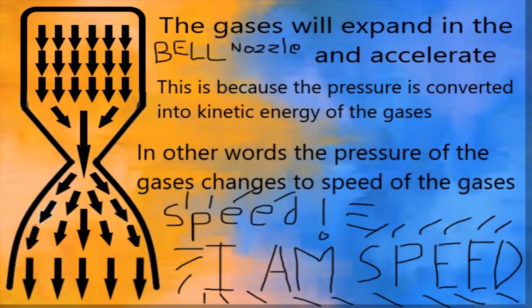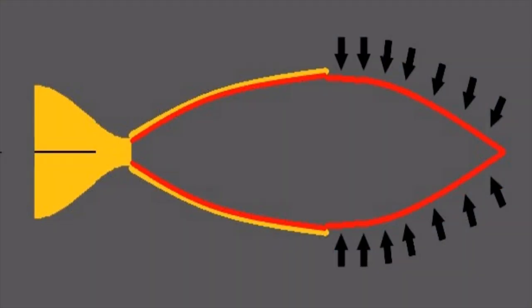The solution to this problem is putting something called the bell nozzle after the engine. What this does is that it allows the gases to accelerate as they expand. In other words, the pressure of the gases is converted into speed of the gases. The longer the bell nozzle, more the pressure will be converted to speed.